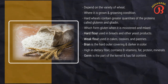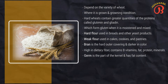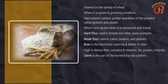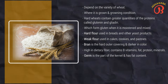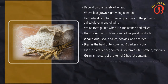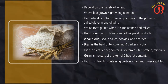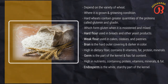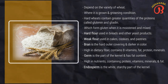Next is germ. The germ is the part of the kernel that becomes the new wheat plant if the kernel is sprouted. It has a high fat content that can quickly become rancid. Therefore, whole wheat flour containing the germ has poor keeping qualities. Wheat germ is high in nutrients, containing protein, vitamins, and minerals as well as fat. Next is the endosperm. The endosperm is the white starchy part of the kernel that remains when the bran and germ are removed. This is the portion of the wheat kernel that is milled into white flour.